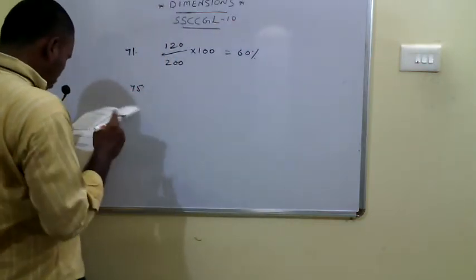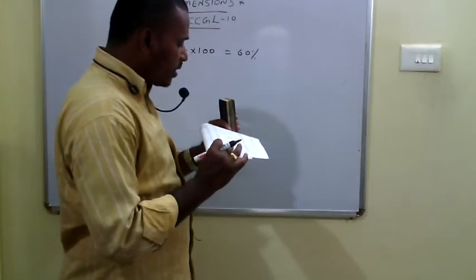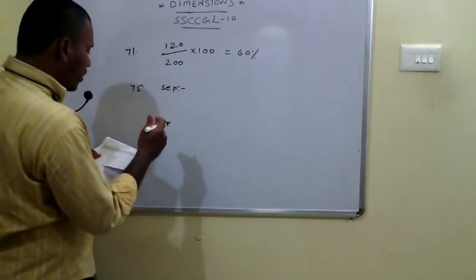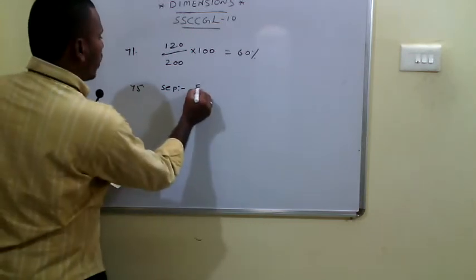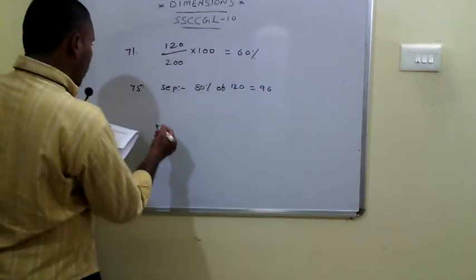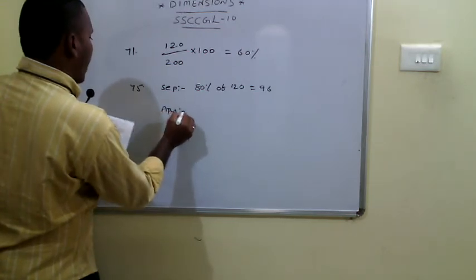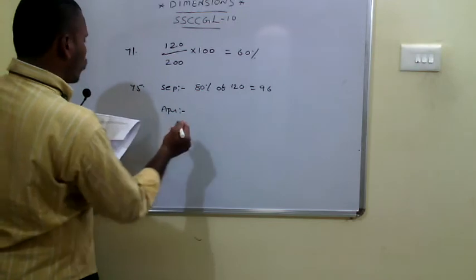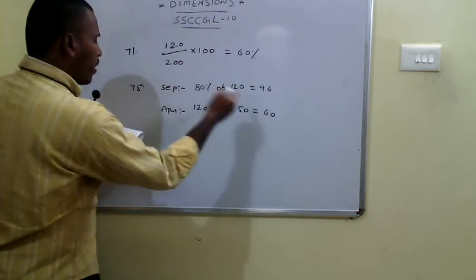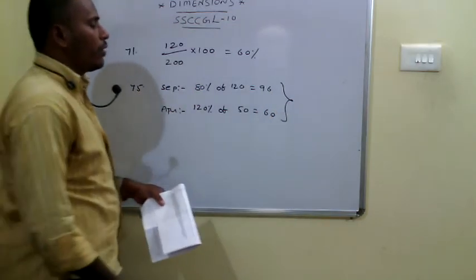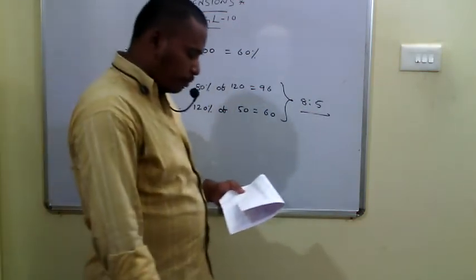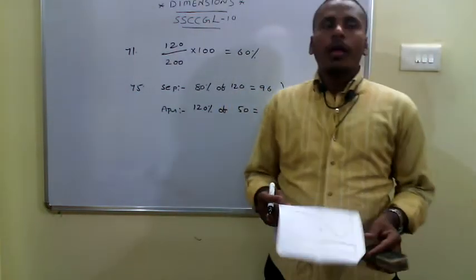The 75th problem: the graph shows October to March, but the question asks about September and April for shop B. September sales are 20% less than October (120), so 80% of 120 = 96. April sales are 20% more than March (50), so 120% of 50 = 60. The ratio of September to April sales is 96:60 = 8:5.